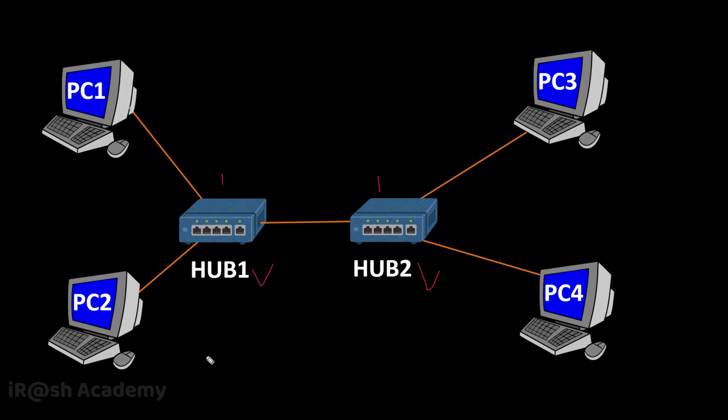Even if we connect multiple network hubs in series, they all share a single collision domain. That means even if we increase the number of network hubs in a network, all the devices connected to that network must use a single collision domain, because a hub has a single collision domain by default.